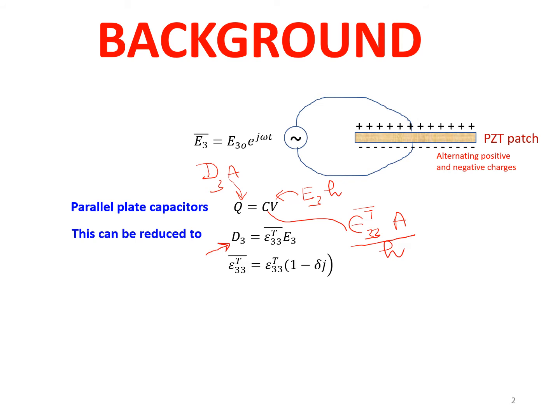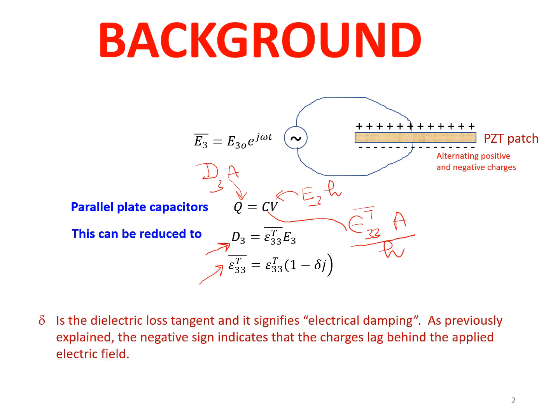An important point noted in the previous class: the dielectric permittivity of the PZT material is a complex number, called the complex dielectric permittivity. It has a term delta, which is the dielectric loss tangent, signifying electrical damping. The negative sign means the charges lag behind the electric field. This parallels the complex Young's modulus, which has a similar imaginary term eta with a positive sign because in that case strain lags behind stress.